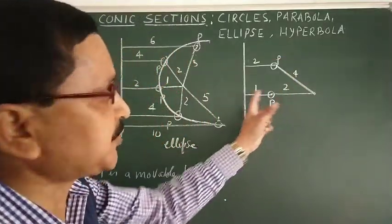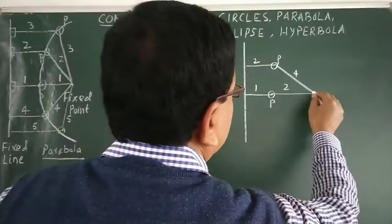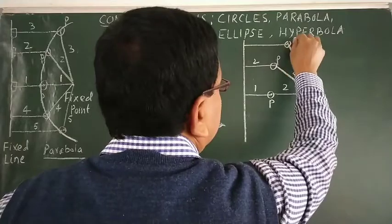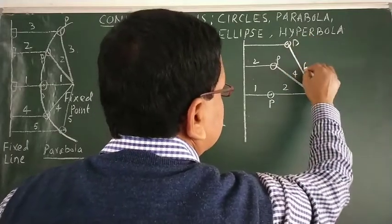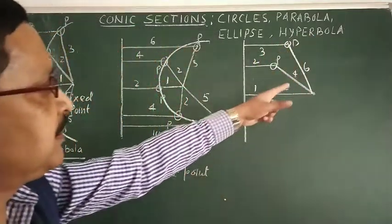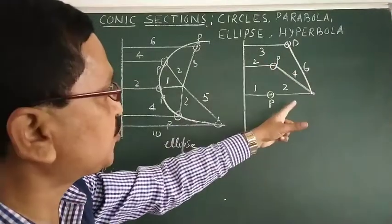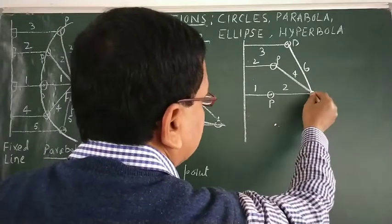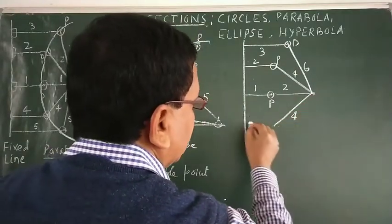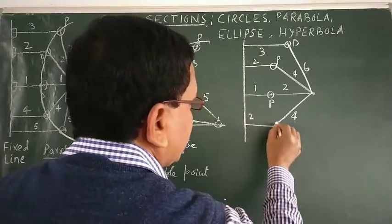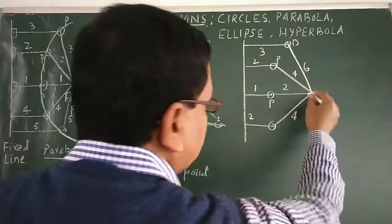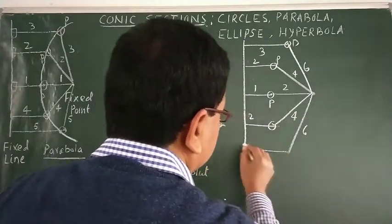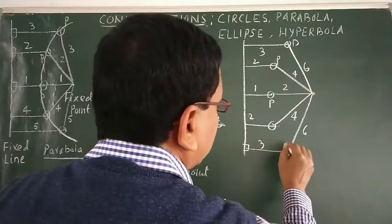The ratio is two to one everywhere. If this length is four, this is two — again two to one. If this is six, this will be three — again six by three is two to one. So if this length is four this is two, again two to one; and if this length is six this length is three.